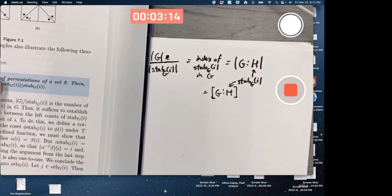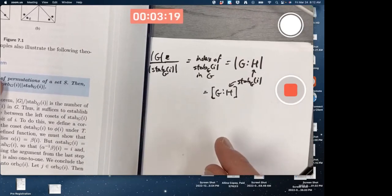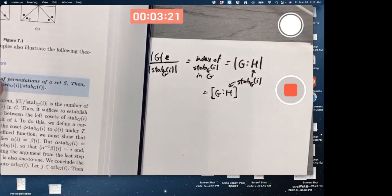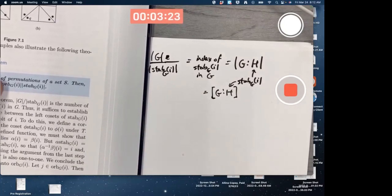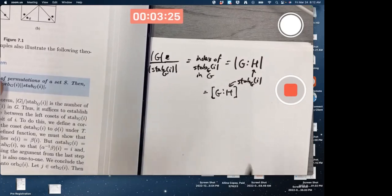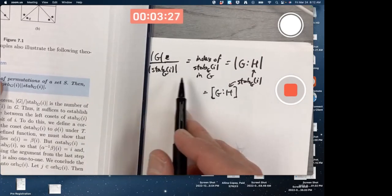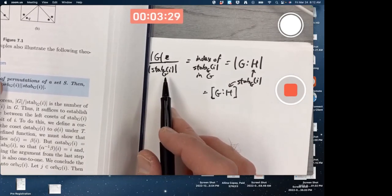Doesn't mean the left and right cosets are equal. That's normality. But the number of them is the same. The number of elements in the cosets, whether they're left or right, is the same. And again, it's called the index. And Lagrange's theorem says that is the same as this ratio.